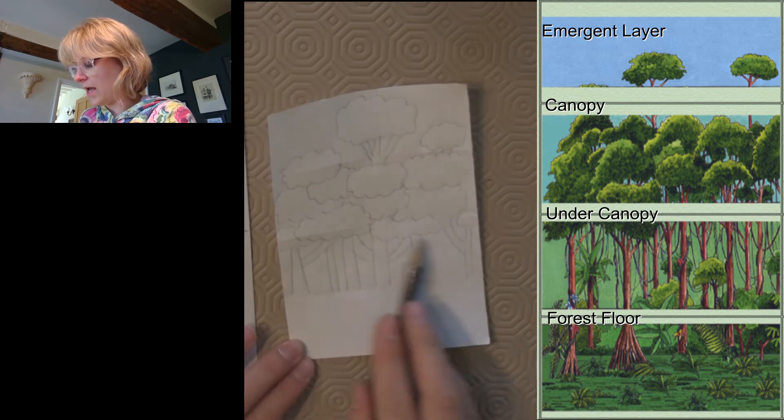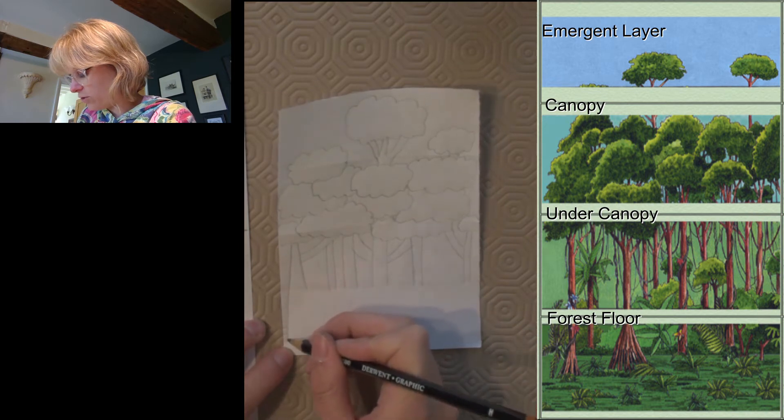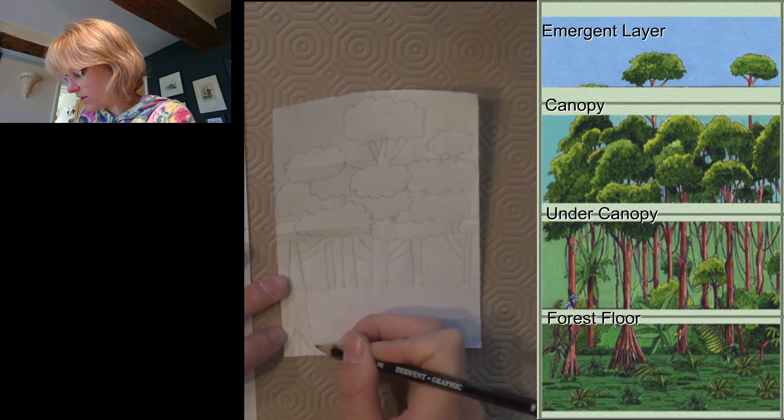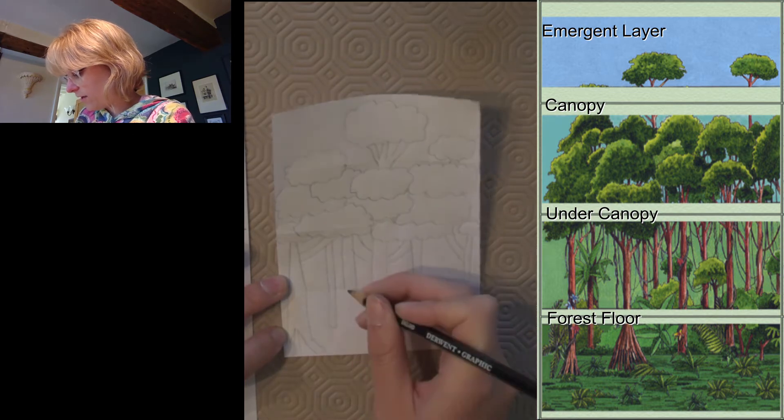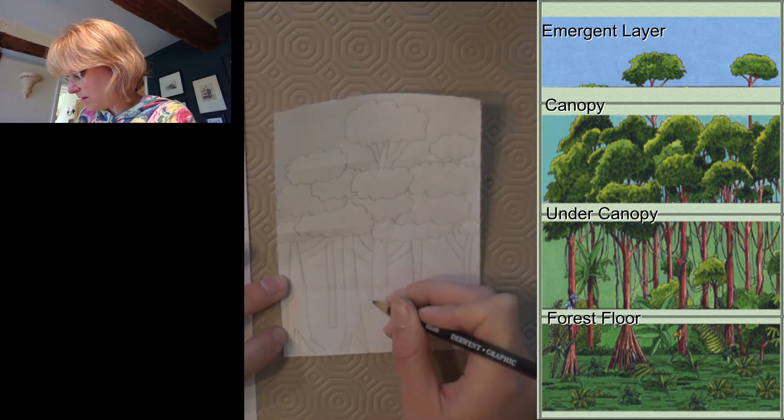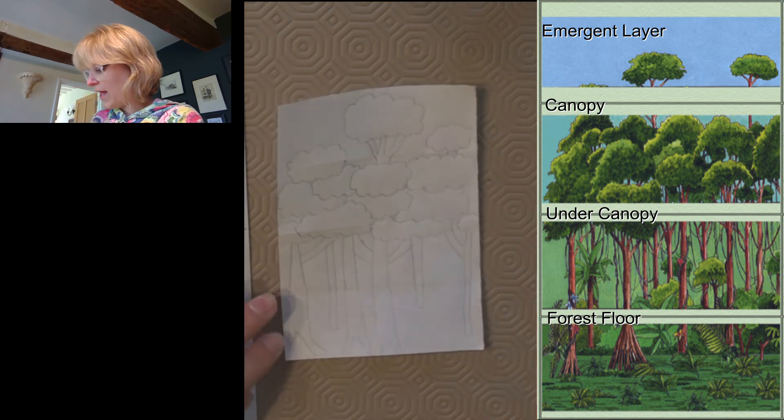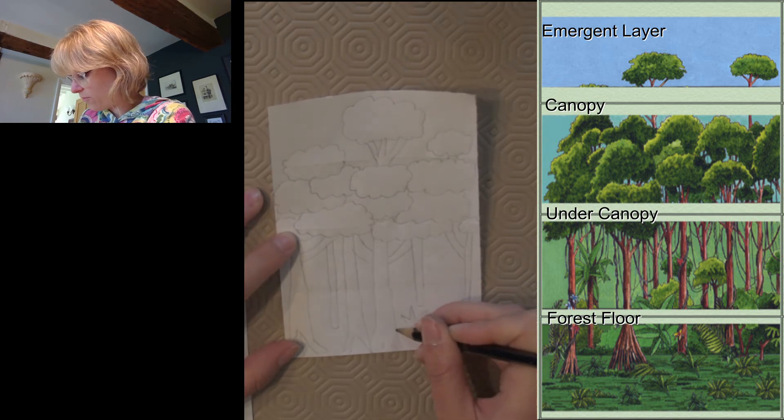So there is the under canopy, and then the last layer is the forest floor. So we need to finish off those trunks, go right down to the bottom. Maybe start drawing some roots, those big roots that you often see. Or you can just sort of finish the trunk off like that. And I might do some ferns and bushes on the bottom of the forest floor.